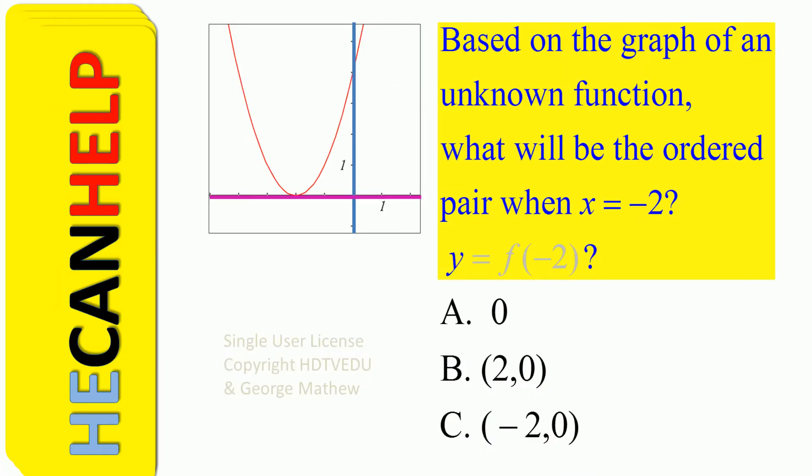Based on the graph of an unknown function, what will be the ordered pair when x equals negative 2? What is the value of the function when x equals negative 2? What is y when x equals negative 2? What will be the ordered pair?